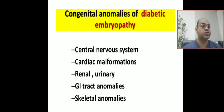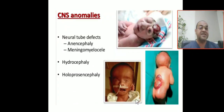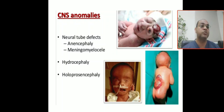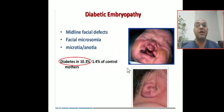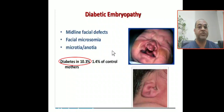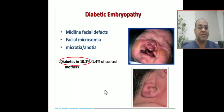Congenital anomalies of diabetic embryopathy are associated with CNS anomalies, cardiac anomalies, renal anomalies, urinary anomalies, GI tract anomalies, and skeletal anomalies. CNS anomalies associated with diabetes include neural tube defects, anencephaly, meningocele, hydrocephalus, and holoprosencephaly. This meningocele shown here, or the baby will have hydrocephalus or holoprosencephaly. Another diabetic embryopathy due to uncontrolled hyperglycemia in the first trimester leads to midline facial defects, facial macrosomia, macrotia, and notia — ear anomalies are also associated with diabetic mother.